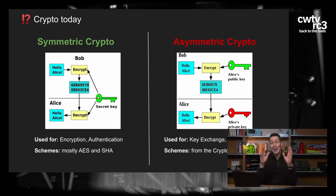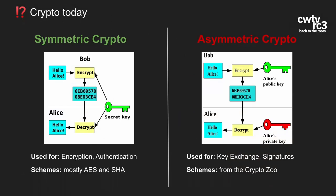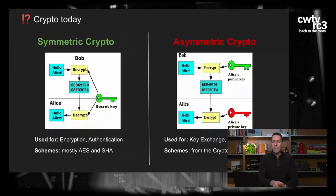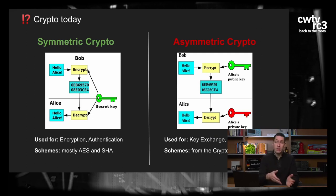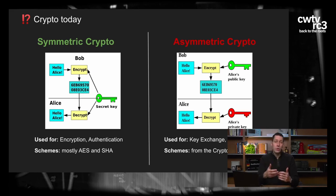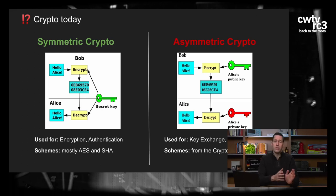Ein paar Grundlagen: Kryptographie ist auf einem hohen Niveau in zwei Teile unterteilt – langweilig und interessant. Die langweilige ist symmetrische Kryptographie. Sie macht, was man erwartet: Du kannst Dinge entschlüsseln und brauchst Authentifikation. Wir haben einen geheimen Schlüssel, den niemand sehen kann. Wenn du diesen Schlüssel hast, kannst du Dinge entschlüsseln – ein Schlüssel für Verschlüsselung und Entschlüsselung. In der Implementierung verwendet man das hauptsächlich für AES oder SHA-Funktionen.